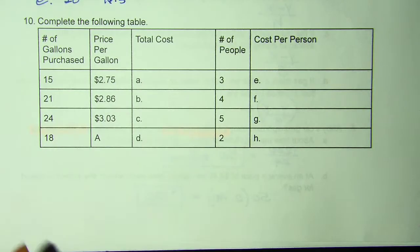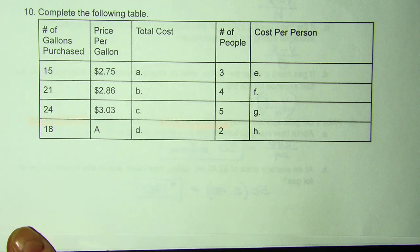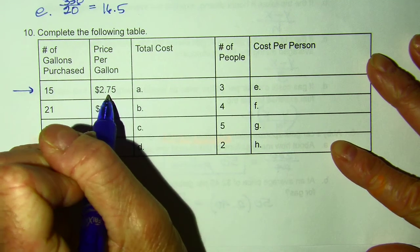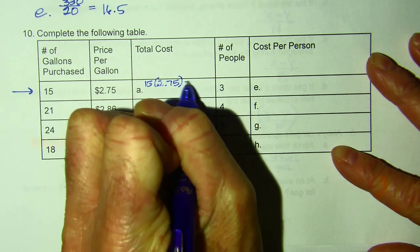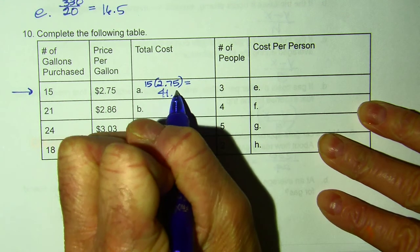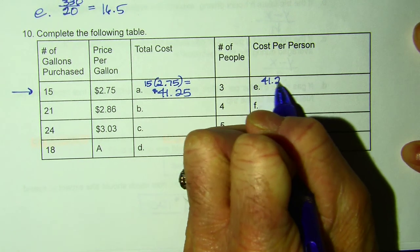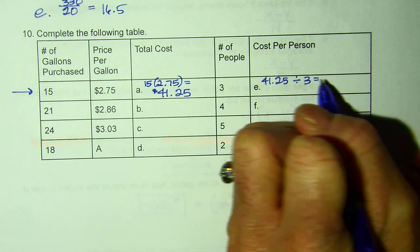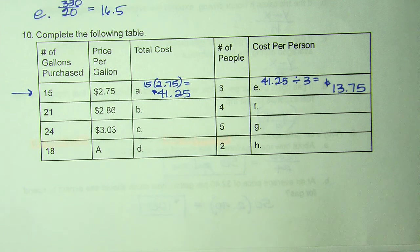Moving on to a much easier one. So if you ever partake in a road trip and figuring out if you want to split gas. So here's the number of gallons purchased. Here's the cost. So total cost should be 15 times $2.75, which gives me $41.25, but there are three people. So I'm simply going to take the total and divide by the number of people.